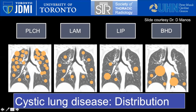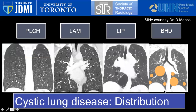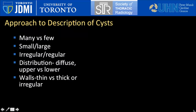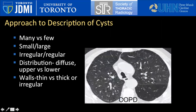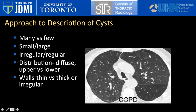In Birt-Hogg-Dubé, the cysts tend to be larger and favor the medial basal segments of the lower lung zones. It's important to have an approach to describing cystic lung disease, but before going down that pathway, make sure you're looking at cystic lung disease and not emphysema. In this patient with COPD, we can see paraseptal emphysema in the upper lung zones. Notice how these do not appear as well-defined cysts — the wall is not clearly defined, favoring paraseptal emphysema rather than true cysts.